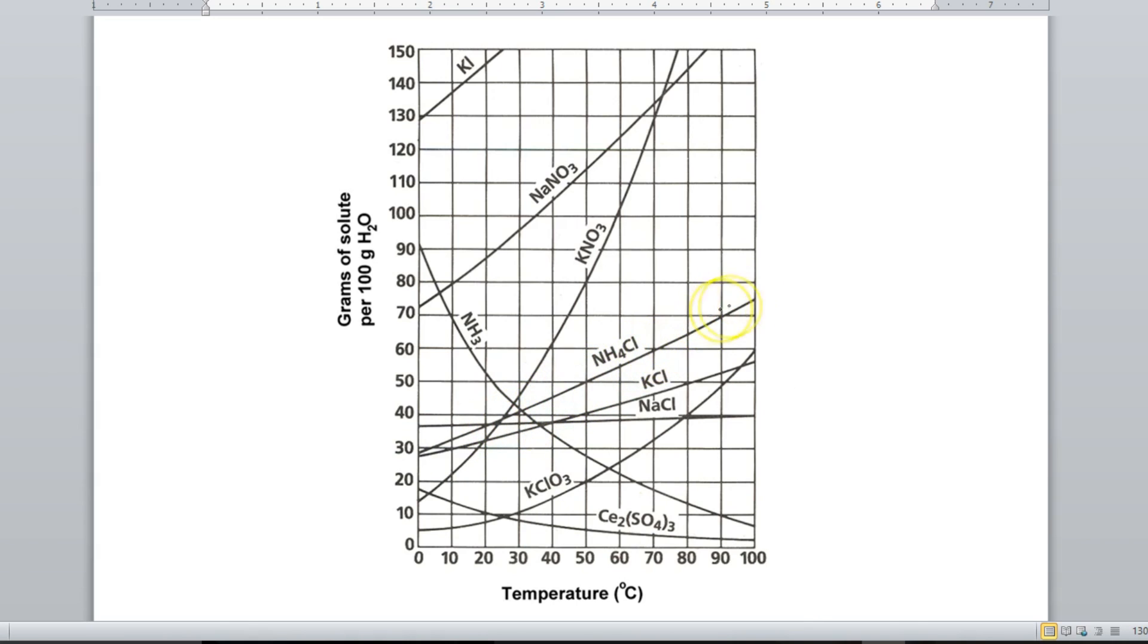Now, anything that is on the line, so if a question is saying, 50 grams of NH4Cl at 50 degrees Celsius, well, that right there is on the line, this is saturated.